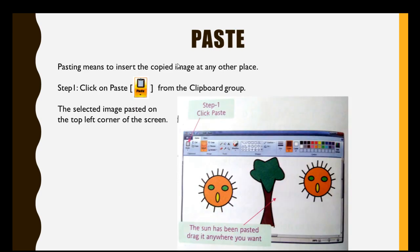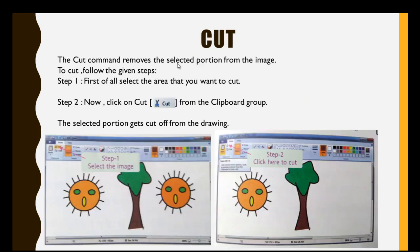Now in this slide, we will paste the picture that we copied previously. For this, we will go to the clipboard group and click on PASTE. Our selected image will be pasted on the top left corner of the screen. From there, we will drag our picture and shift it to where we want to place it. In this picture, we are watching two suns, as we pasted one more sun using the copy-paste command.